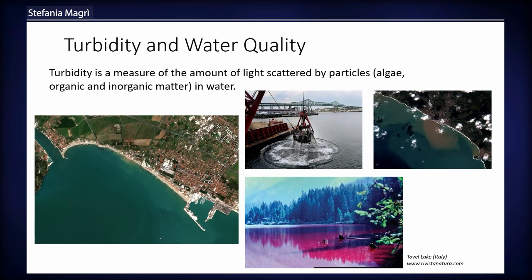So what is turbidity? Turbidity is a measure of the amount of light scattered by particles in water. For seawater, changes in turbidity are due to algal blooms, but the most relevant contribution is due to sediment — for example, sediment coming from river flows. Especially when related to anthropogenic activities like beach nourishment or dredging, the increase of turbidity can be associated with negative environmental effects. That's why turbidity is one of the parameters considered under European legislation for water quality monitoring.